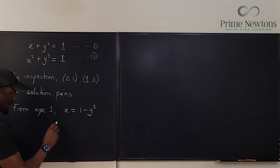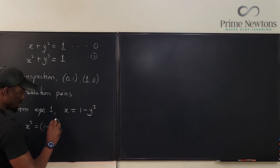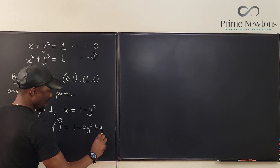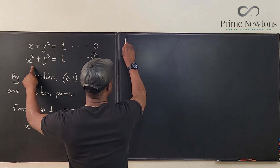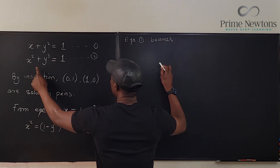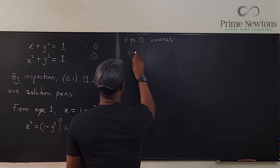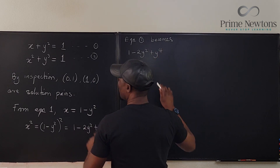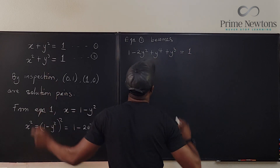From equation one, we know x equals one minus y squared. So if I want x squared, I know x squared equals (1 - y²)², which expands to one minus two y squared plus y to the fourth. So equation two becomes: instead of x squared I write (1 - 2y² + y⁴), plus y cubed equals one.